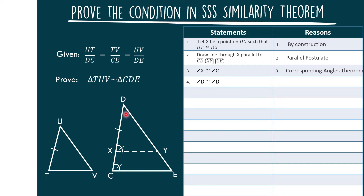Statement number 4: Angle D is congruent to angle D. Since triangle CDE and triangle XDY share angle D, by the reflexive property they are congruent. So we have two angles that are congruent between these triangles.